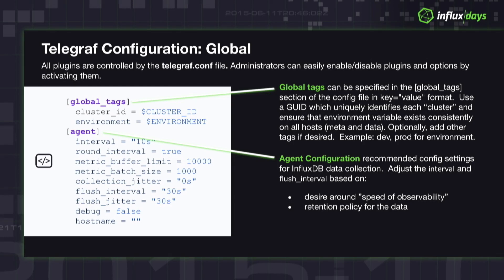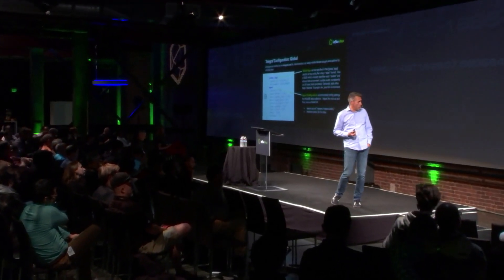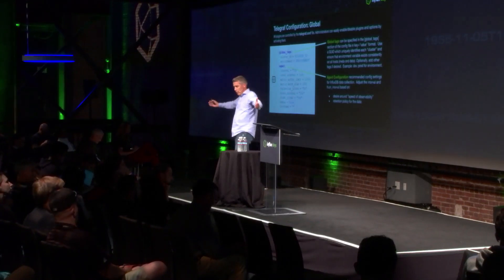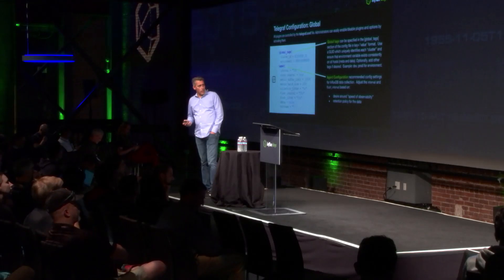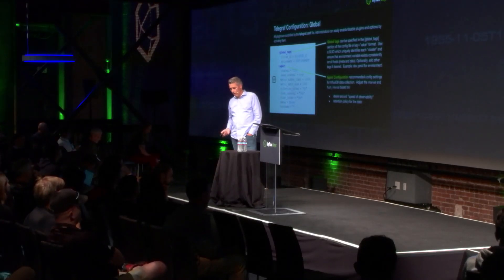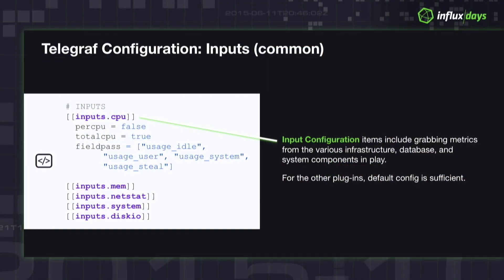You adjust these configurations based on your desired speed of observability — how quickly do you want to gather those metrics and potentially respond to an issue. We're gathering them at roughly 10-second intervals, grabbing three packets of those things, and landing them over time. We've been downsampling this information and providing a longer-term view, but for throughput monitoring and alerting for our support team, we want to know the second something happens. For CPU, we're gathering idle, user, system, and steal stats, plus total CPU count so we can aggregate. Then we activate the memory, netstat, system, and disk plugins as well.